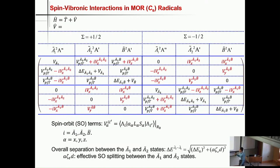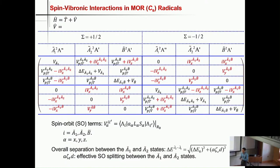We also have the spin-orbit interaction. The overall separation of the A1 and A2 states has contributions from both delta E naught and the spin-orbit interaction. The spin-orbit interaction constant for non-linear polyatomic molecules is called A·zeta_E·D, where A is the atomic-like spin-orbit constant, zeta_E is the electronic quenching factor, and D is the vibronic quenching factor. The overall separation can be calculated using this simple equation.